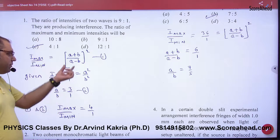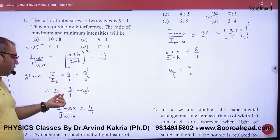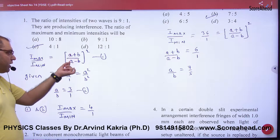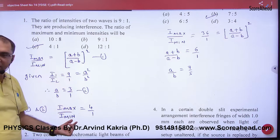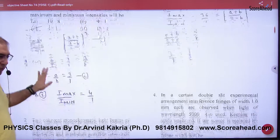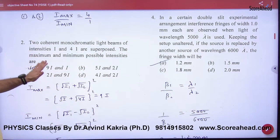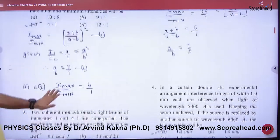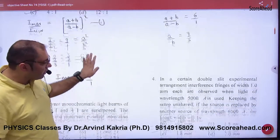So here, a upon b, a is equal to 3b. Put a equals 3b and solve the intensity max to intensity minimum ratio. So NCERT problem, I asked a question for homework. You will get homework, superposition you will try, NCERT based.